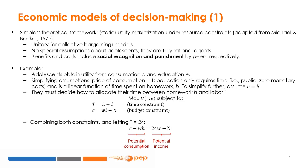As an example, let us consider the decision made by an adolescent between continuing her education or working in the labor market. A model that captures this decision is a utility maximization where the adolescent obtains utility from a consumption good, denominated by C, and from education directly, denominated by E. We assume the price of the consumption good equals one, and that education is publicly provided so that it has zero monetary costs. Education requires time spent on homework and studying, denominated by H. Individuals face two constraints: a time constraint and a budget constraint.